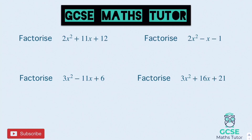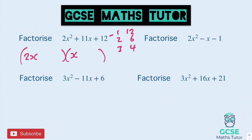Factorising the first one: factors of 12 are 1 and 12, 2 and 6, or 3 and 4. In the brackets we're going to have 2x and x. We're trying to make 11, so looking through the numbers — I can't make 11 doubling anything in 1 and 12, and 4 and 6 or 2 and 12 won't make 11 either. So it must be the 3 and the 4. Double 3 is 6 plus 4 makes 10 — doesn't work. But double 4 to make 8 plus 3 makes 11 — that works. So we'll put the 4 here and the 3 here, and they're all positive.